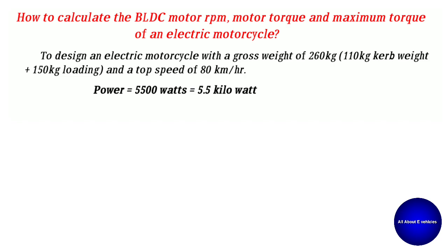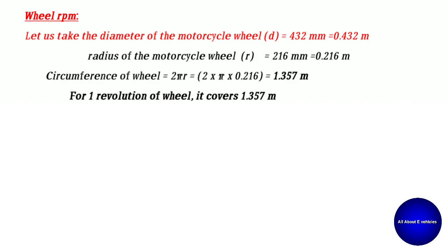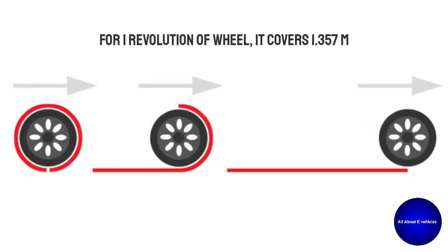First, we can find the wheel RPM. As shown in the figure, we take the diameter of the motorcycle wheel as 0.432 meters, so the radius of the motorcycle wheel is 0.216 meters. Therefore, the circumference of the wheel is 2πr, which gives us 1.357 meters. This means that for one revolution of the wheel, it covers 1.357 meters.